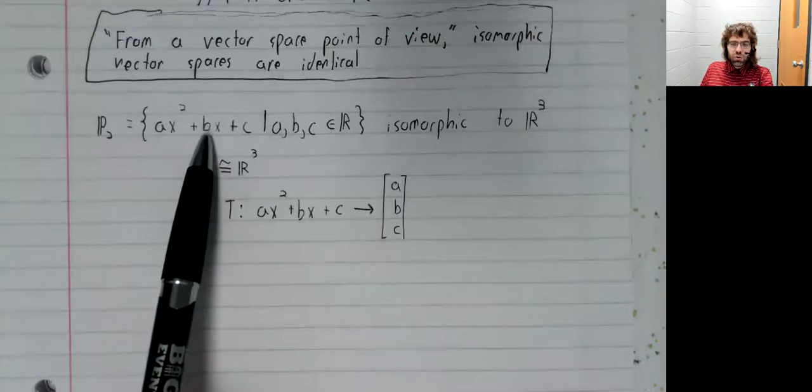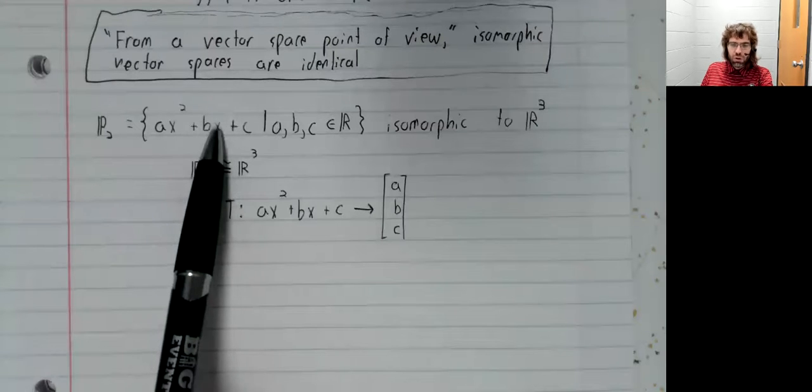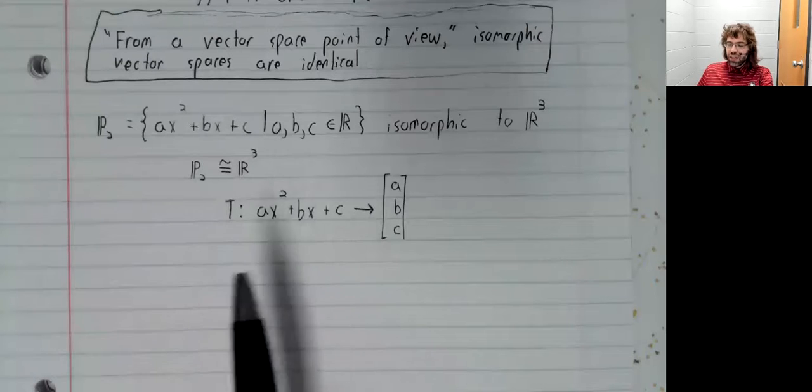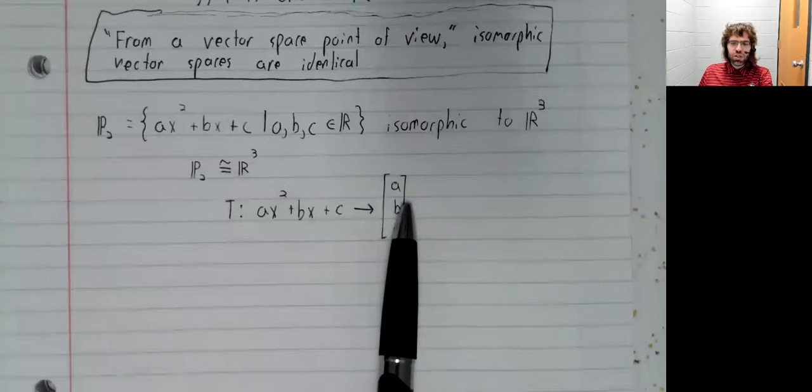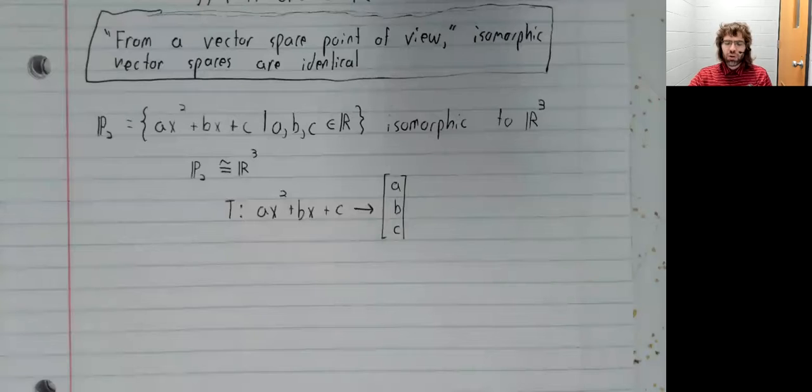Multiplying two polynomials together is not a vector operation. Our only vector operations are addition and scalar multiplication. And if we restrict ourselves to those, anything that we do to these polynomials we can also do to these vectors, and the spaces are indistinguishable.